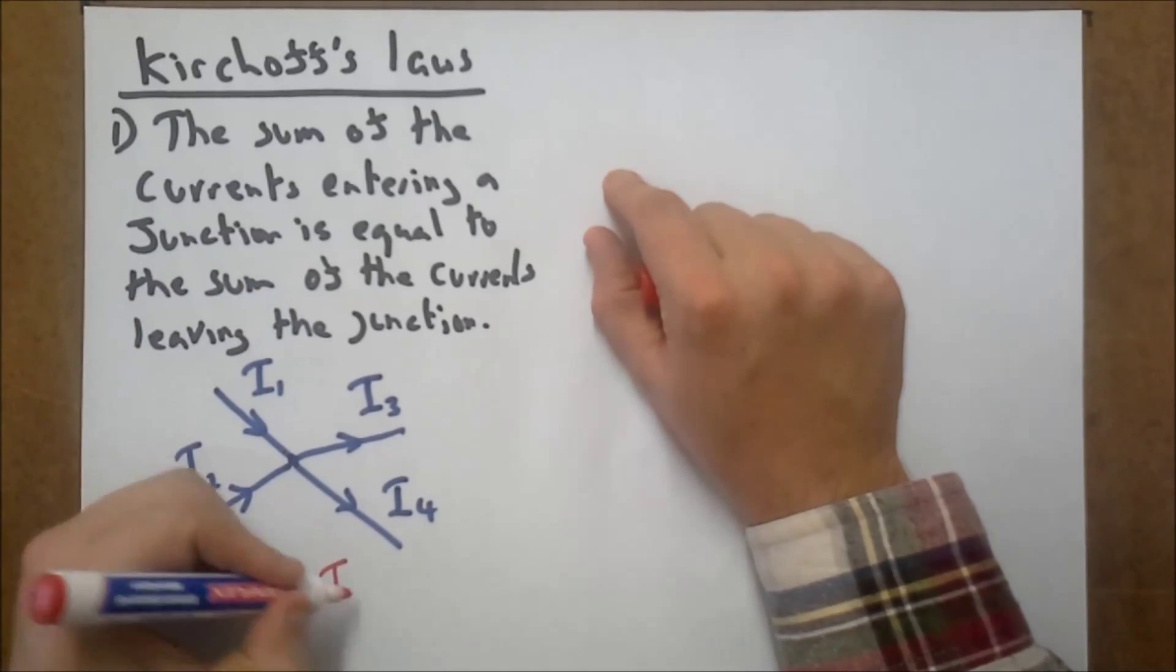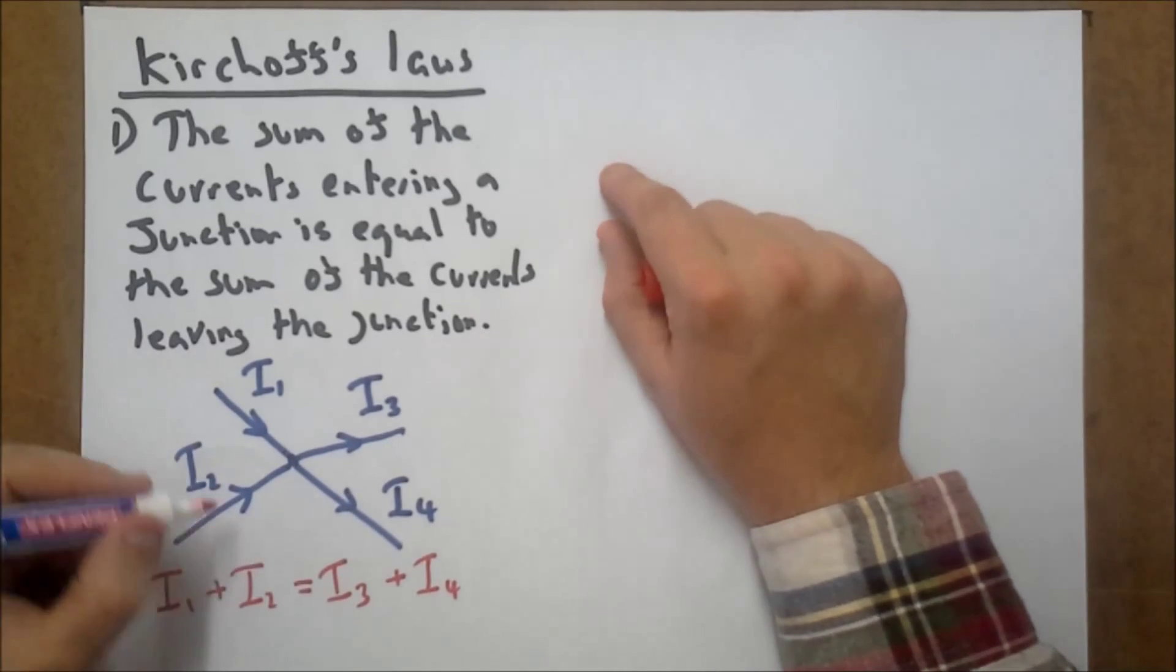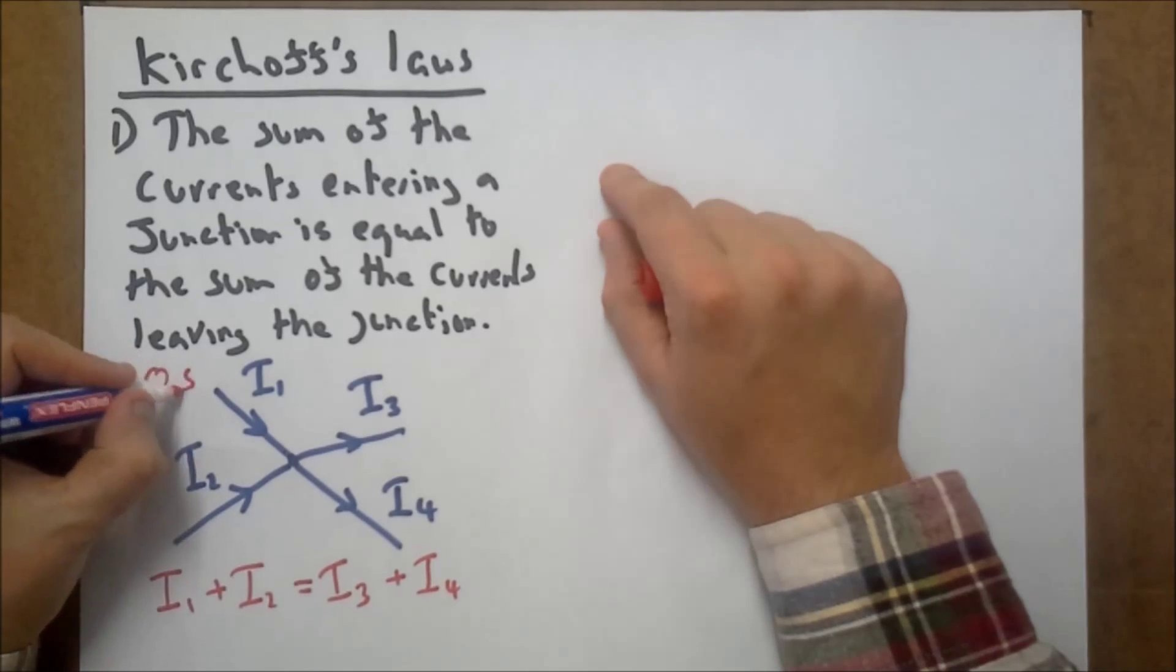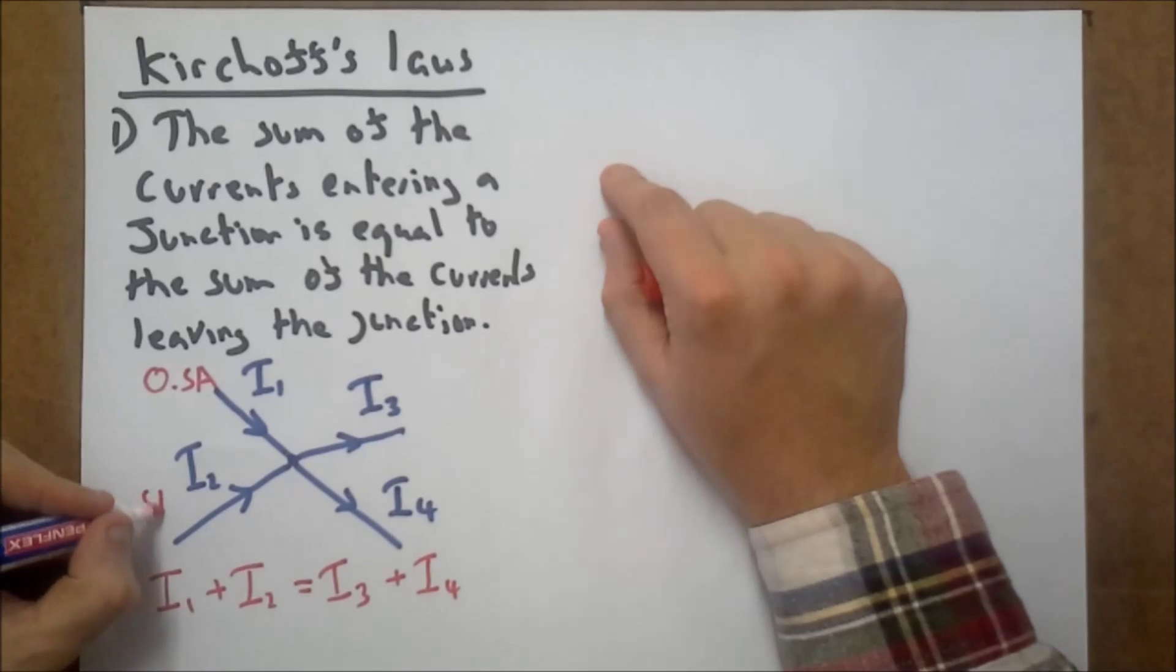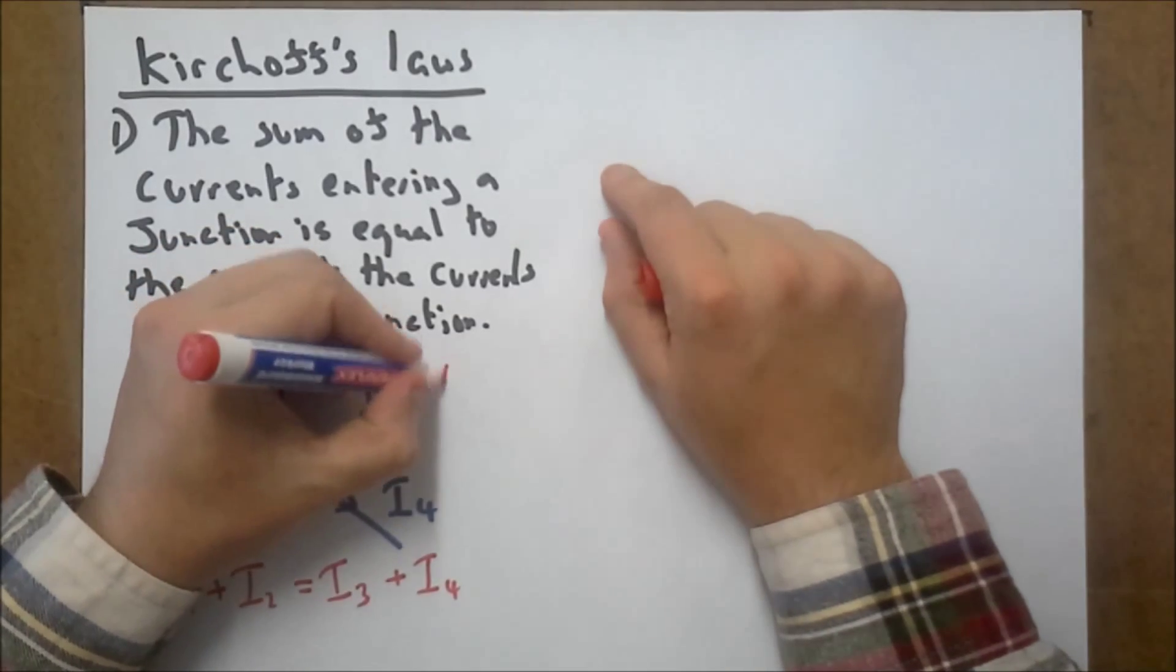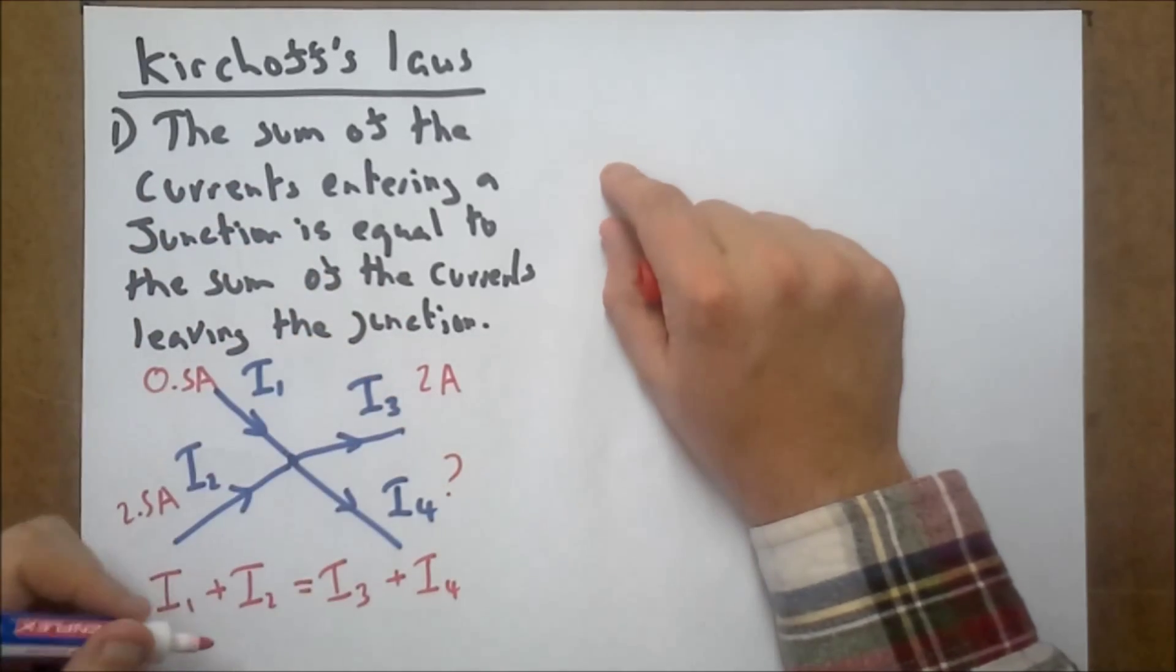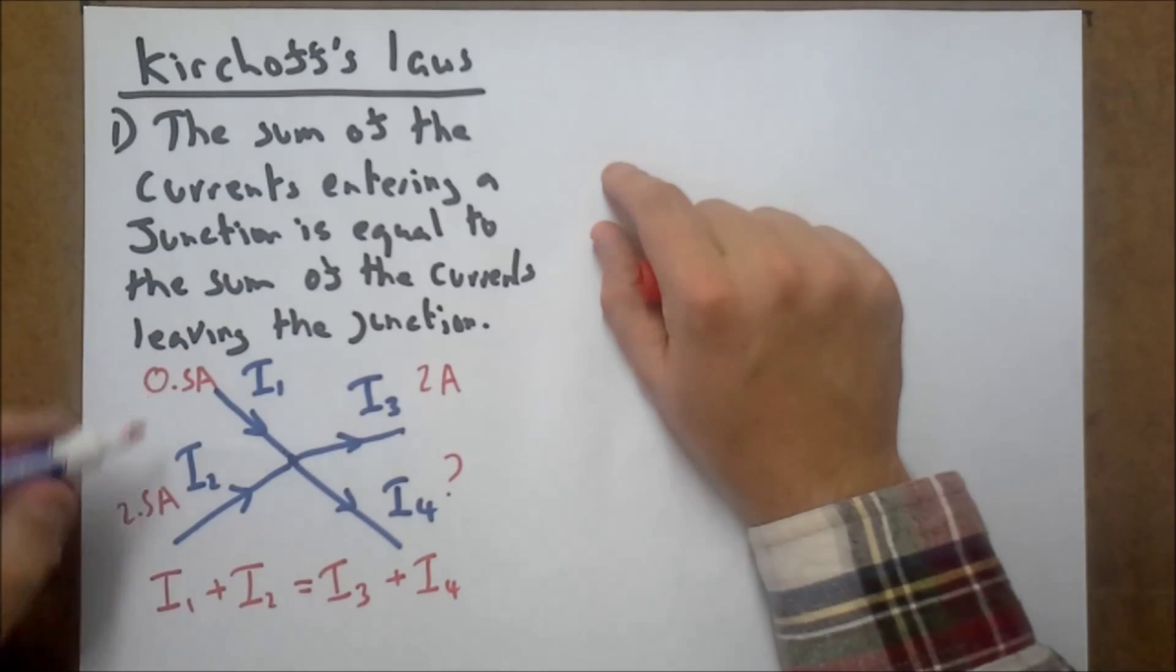I3 plus I4. So let's put some numbers in. If I've got 0.5 amps here for I1 and 2.5 amps for I2 going in, maybe I3 is 2 amps - well, what's I4? Well, all I have to do is simply plug the numbers in.